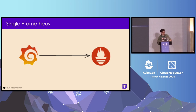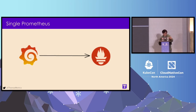However, you start to see some problems when there's a deployment going on for your Prometheus server. If you only use a single Prometheus server, during the deployment it will take down your Prometheus server. It will take a few minutes to wait for it to get back, and then you will have a few minutes of downtime and you can see some gaps in your Grafana dashboard.